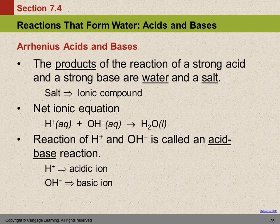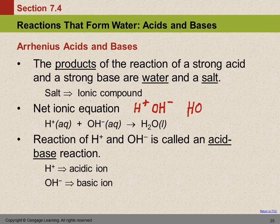The net ionic equation for these acid-base reactions is pretty much always going to be the same: it's going to be hydrogen ions plus hydroxide ions getting together to form water. If we put H+ and OH− together — well, you've got plus one and minus one, so you just need one of each. You might write HOH, but if you put the two H's together, you get H2O. That's water. So water is the product of hydrogen ions plus hydroxide ions.